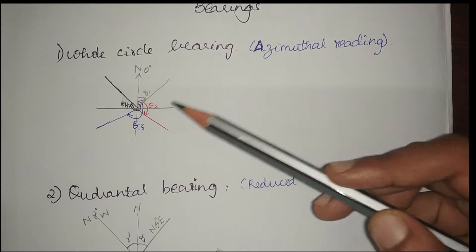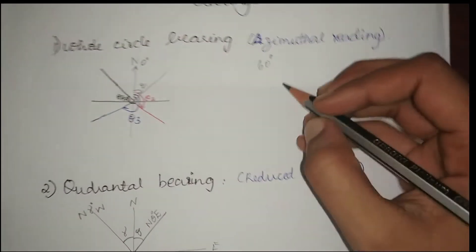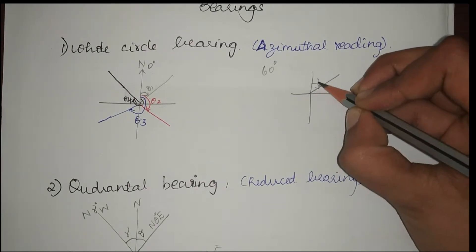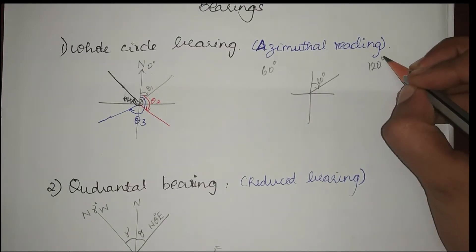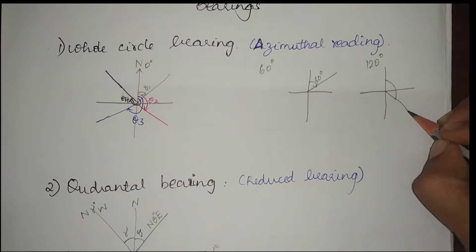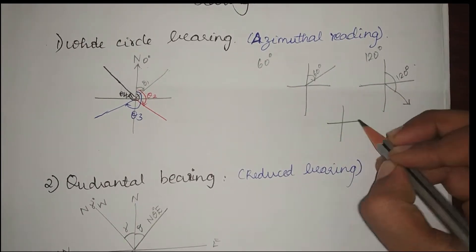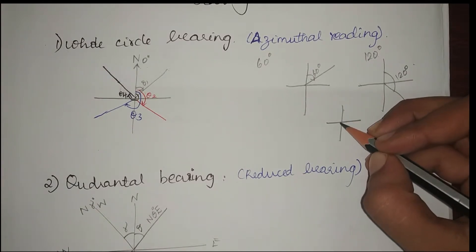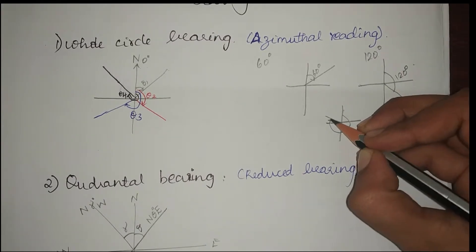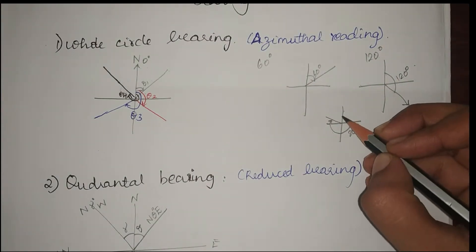This is whole circle bearing. For example, if your answer is 60 degrees, your whole circle bearing will be 60 degrees. If it is 120 degrees, it will be 120 degrees. If it is 280 degrees, it will be 280 degrees — and so on, because we measure only with respect to our north, which is also called the 0 degree.